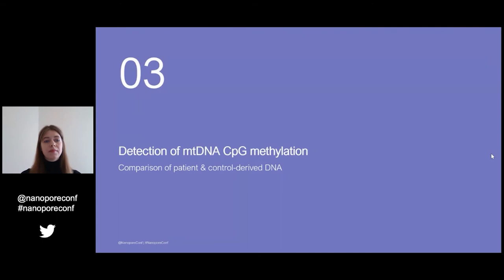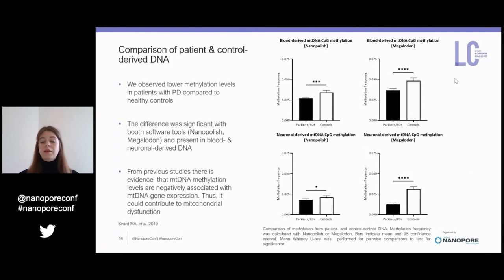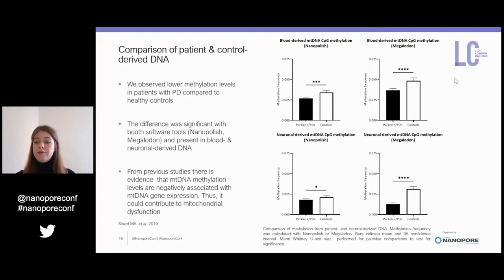Finally, we investigated differences between patient and control-derived DNA. We observed lower methylation levels in patients with PD compared to healthy controls. The difference was present in the same direction in the blood-derived samples, as seen in the upper two panels, and also in the neuronal-derived samples, as seen in the lower two panels, regardless of which software tool was used. In the Megalodon analysis, we observed an average methylation frequency of 0.03 in Parkin PD patients' mtDNA compared to 0.05 in controls for blood-derived DNA, and 0.02 in patients versus 0.03 in controls for neuronal-derived DNA.